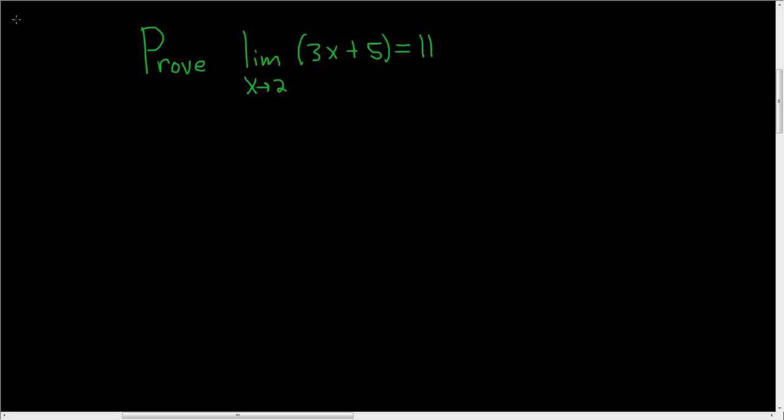Proof that the limit of 3x plus 5 as x approaches 2 is equal to 11. We're going to use the delta epsilon definition of a limit to do this. So let's recall that before we get started.